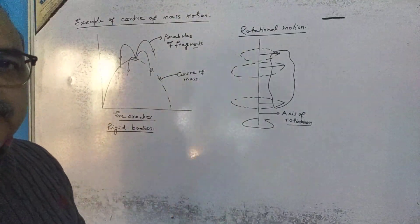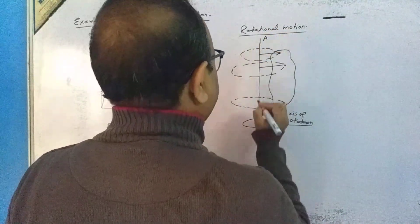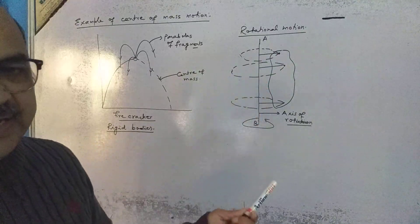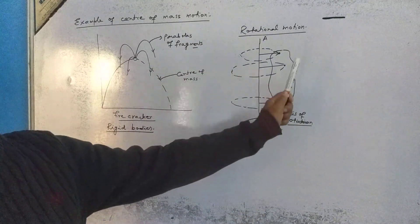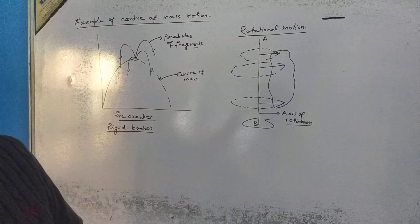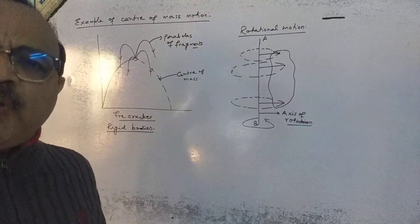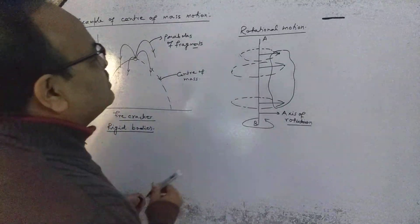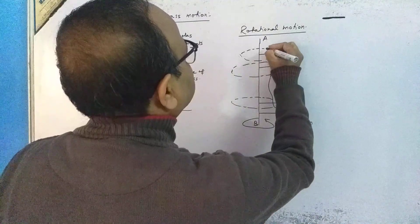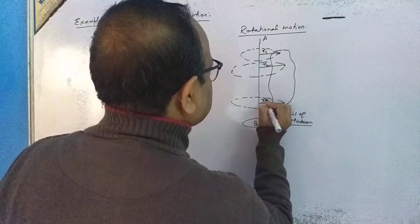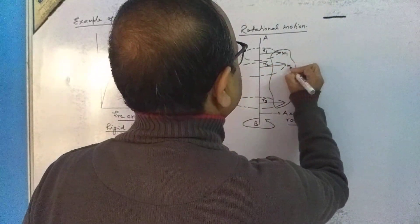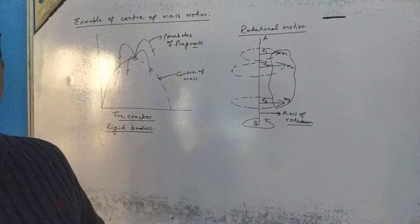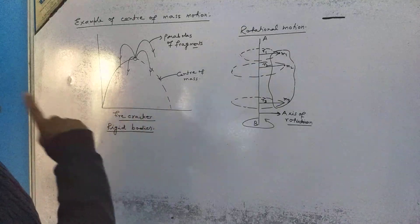Let us say AB is an axis of rotation, and a rigid body is rotating about it. Rotation means the rigid body is made up of a large number of point masses. I have shown three: point masses m1, m2, and m3. These point masses are always at certain distances — the first is at distance r1, the second at r2, the third at r3.